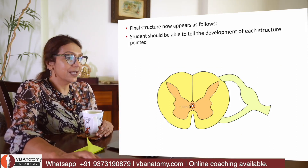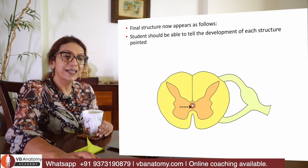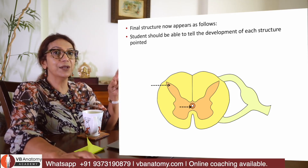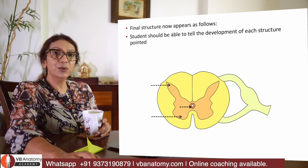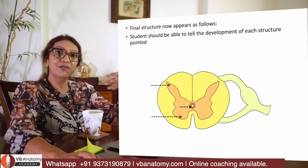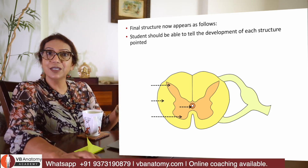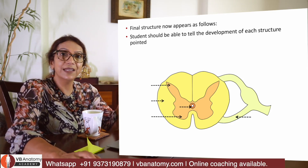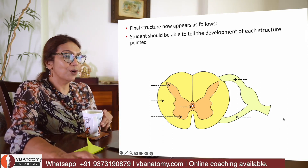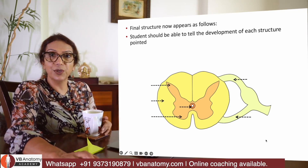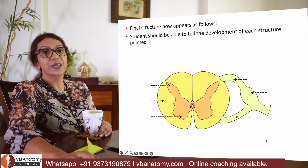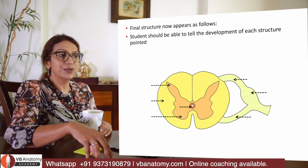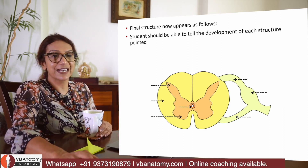What questions can I ask you? Development of the central canal — ependymal zone. Posterior grey horn — alar lamina of mantle zone. Anterior grey horn — basal lamina of mantle zone. White matter — marginal zone. Ventral root — axons of neurons in the anterior grey horn. Posterior root — axons of the dorsal root ganglion pseudo-unipolar neurons. The dorsal root ganglion neurons are developed from the neural crest cells.